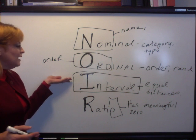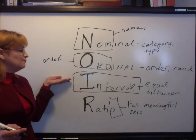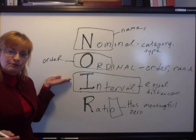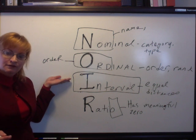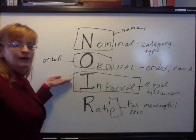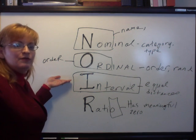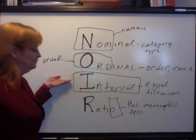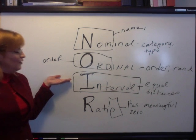An example of an interval scale would be temperature. There's no meaningful zero, and numbers can go negative.